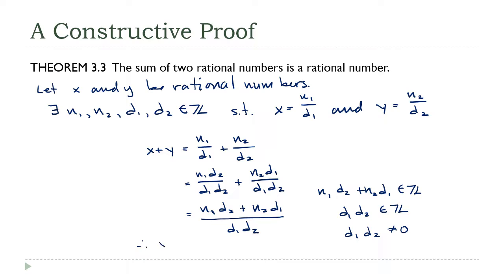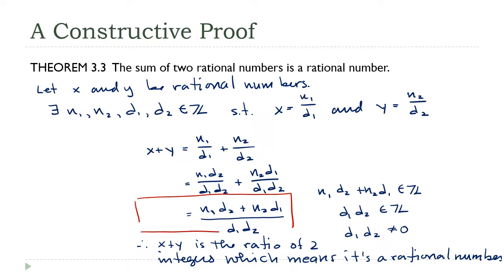Therefore, x plus y is the ratio of two integers, which means, is by the definition here, which means it's a rational number. And that's what we needed to show. And you see how we did get on this step right here, we did get that formula. We actually built or constructed the sum of these two numbers. So there's our proof.